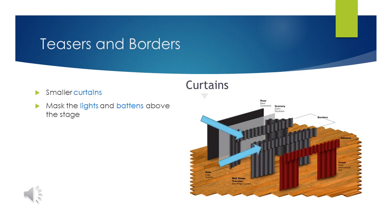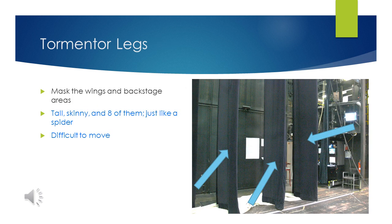Teasers and borders are small curtains on the top of the stage. These mask the lights and battens above the stage. They are often called teasers and borders because you only see the bottoms of them from the audience. Tormentor legs mask the wings and backstage area. Why are they called legs? Well, they are tall, skinny, and there are typically eight of them, just like a spider. Why do we call them tormentors? They can be extremely difficult to move.